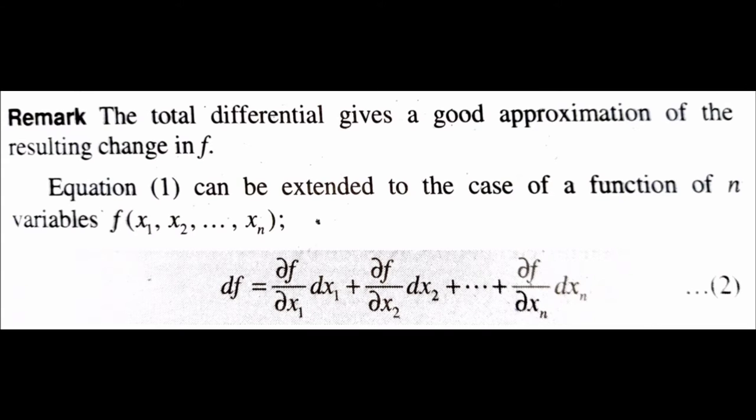The total differential gives a good approximation of the resulting change in f. Equation one can be extended to the case of a function of n variables f(x1, x2, ..., xn). That is, df = (∂f/∂x1)dx1 + (∂f/∂x2)dx2 + ... + (∂f/∂xn)dxn. This is equation number two.